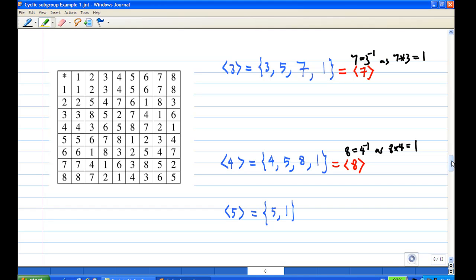Now let's look at the cyclic subgroup generated by 3. It consists of 4 elements: 3, 5, 7, and 1. Therefore, the order of 3 is equal to 4. Since the inverse of 3 is 7, the cyclic subgroup generated by 7 is the same as the cyclic subgroup generated by 3, so the order of 7 is also equal to 4.